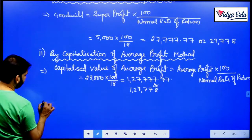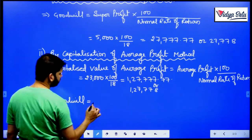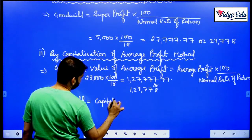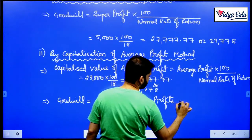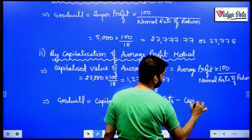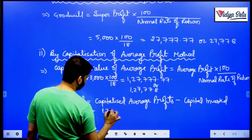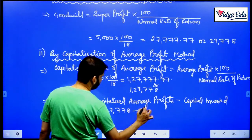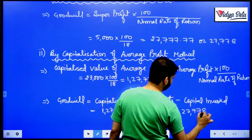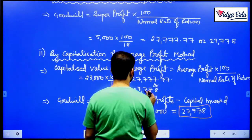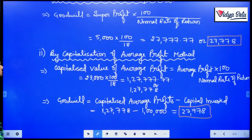Next, goodwill equals capitalized average profit minus net assets or capital invested — one and the same thing. So that is 1,27,778 minus capital invested of rupees 1 lakh, giving us 27,778. This is our goodwill here also — and it is the same in both methods.